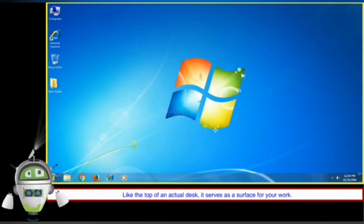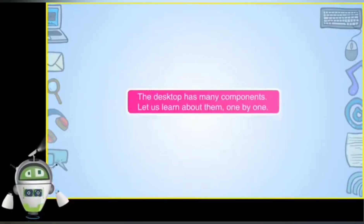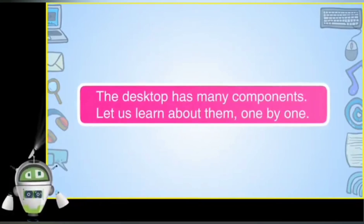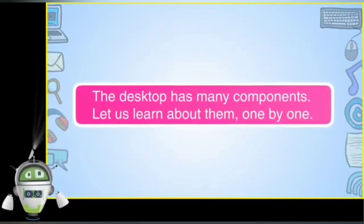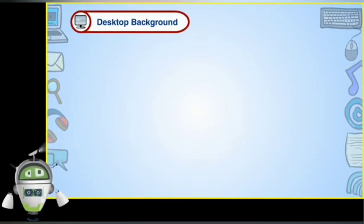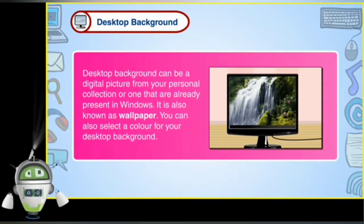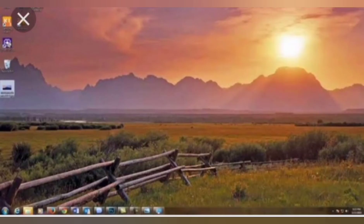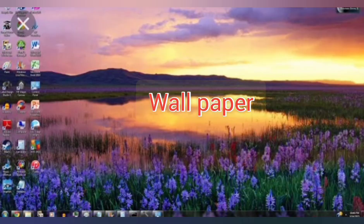The desktop contains many components: desktop background, icons, taskbar, etc. Desktop background is the image in the background of icons. For example, a sunrise image is the desktop background. The desktop background is also known as wallpaper.